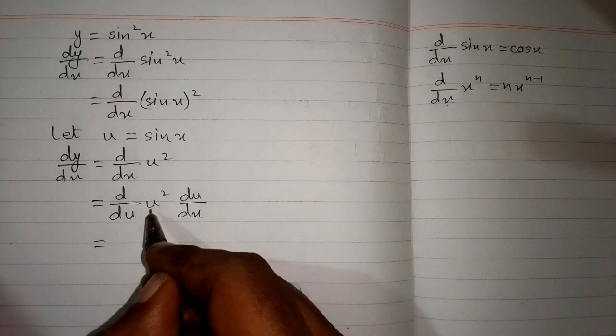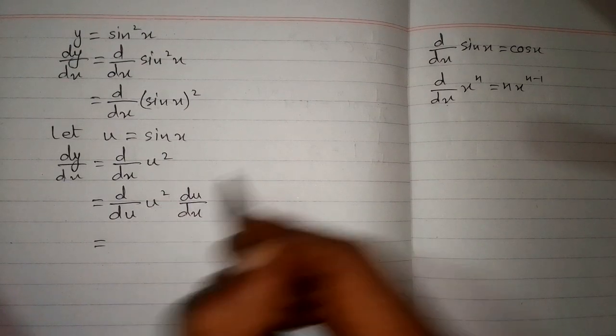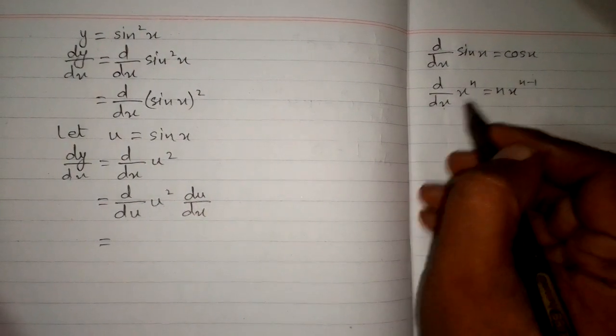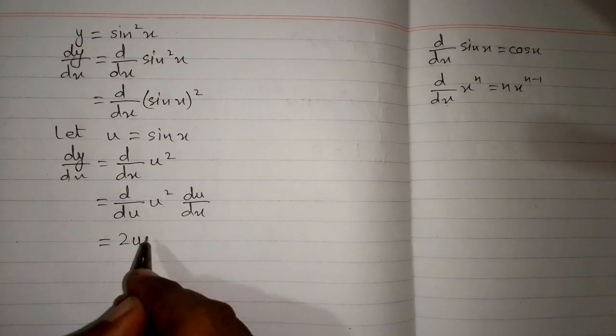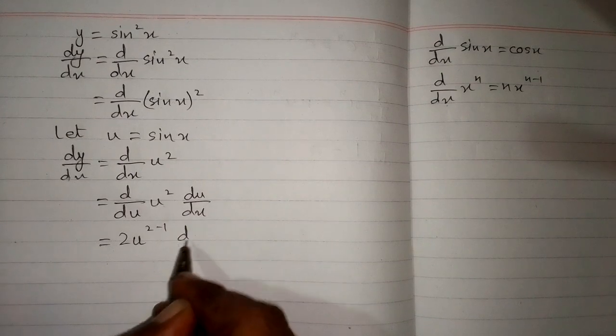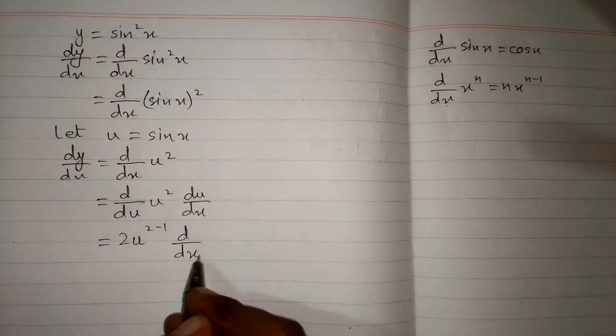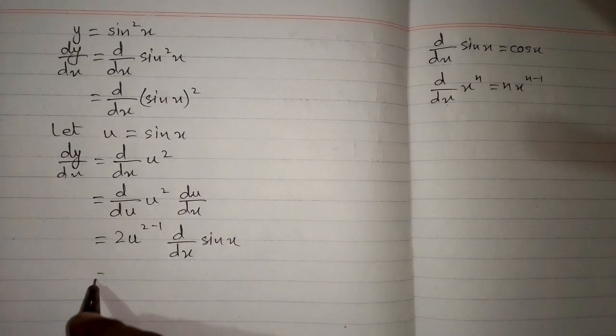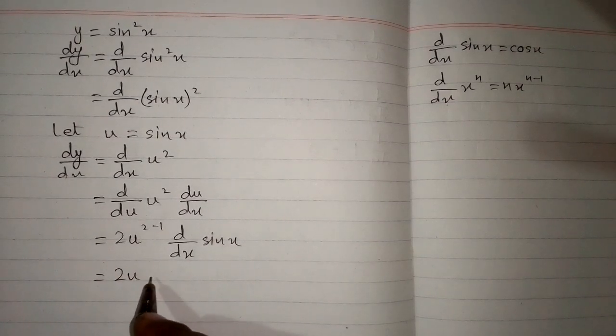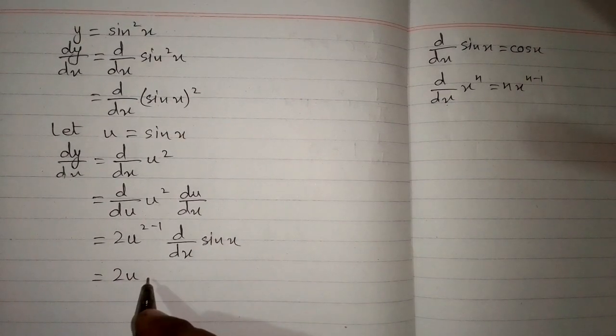We can see that we have 2 in place of n, so we put 2 in the formula. This gives us 2·u^(2-1) multiplied by the derivative of u. Since u = sin x, we have 2u times the derivative of sin x, which is cos x.